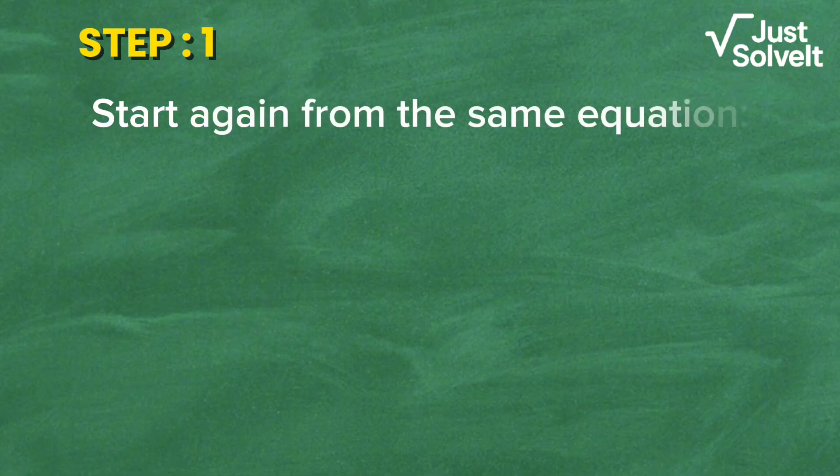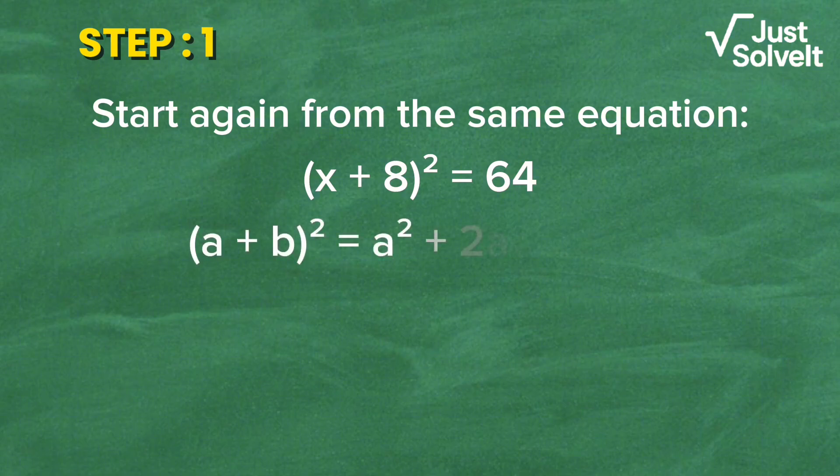Start again from the same equation: (x + 8) squared equals 64. Now expand the left side using the identity (a + b) squared equals a squared plus 2ab plus b squared. Here, a equals x and b equals 8.